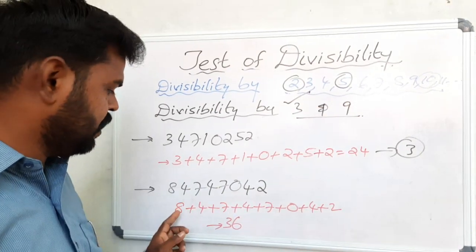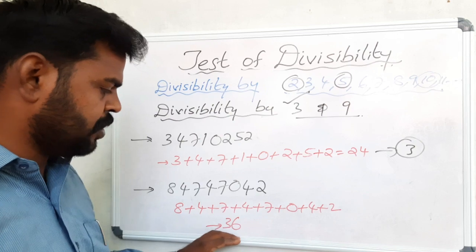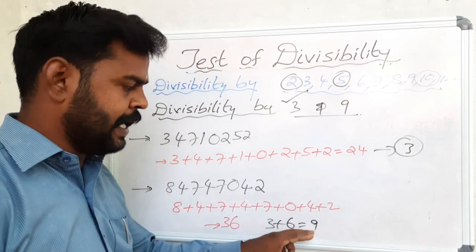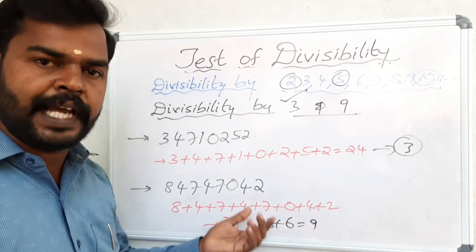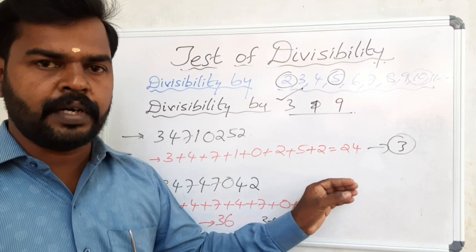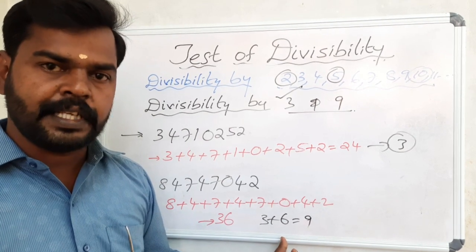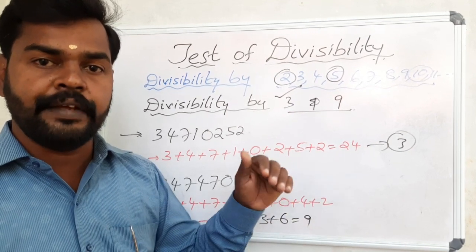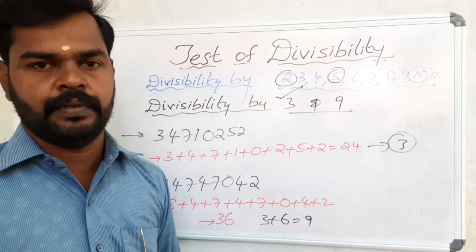Next number: 8+4+... sum of digits is 36. We can also verify: 3+6 = 9. Nine is a multiple of both 3 and 9, so this number is divisible by both 3 and 9. Important note: a number divisible by 3 may or may not be divisible by 9, but a number divisible by 9 is always also divisible by 3.